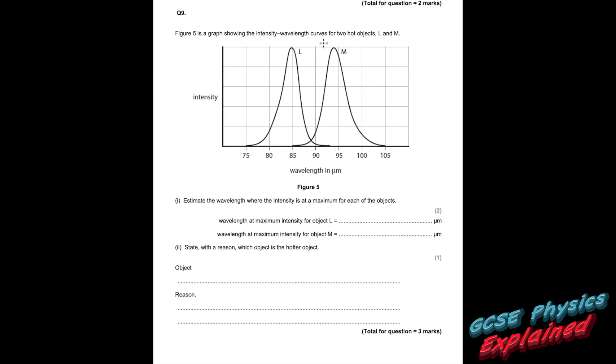In this image, hot objects L and M. So this is the third time we've saw this type of graph. Estimate the wavelength where the intensity is at a maximum for each of the objects. Wavelength at a maximum intensity for object L. There's object L. Where is it at its maximum? Around about there. So 85 micrometers. And wavelength at a maximum intensity for object M. About there is the maximum intensity. What's that? About 94 micrometers. State with a reason which object is the hotter object. It'll be object L because it's got a shorter wavelength.